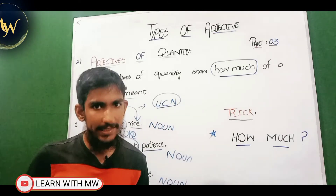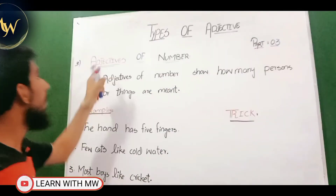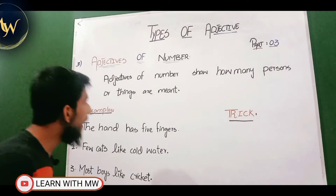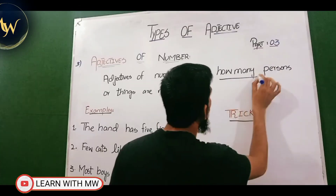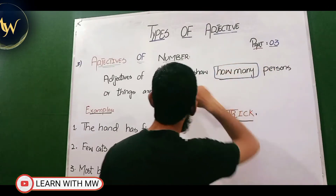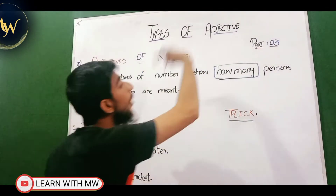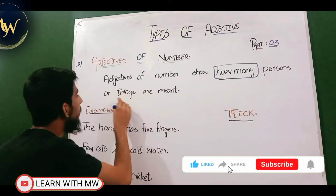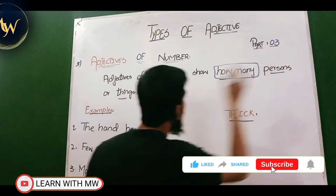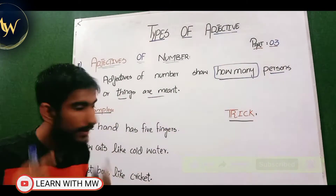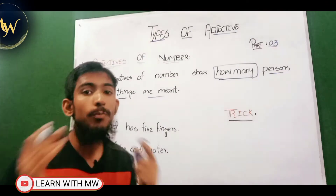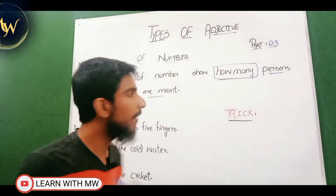Now we will discuss the third type of adjective: adjective of number. Adjective of number basically shows how many persons or things are meant — 'how many' is the key phrase. This is the definition of adjective of number. The trick: adjective of number always answers the question 'how many,' whereas adjective of quantity always answers the question 'how much.' That is the important distinction to remember.